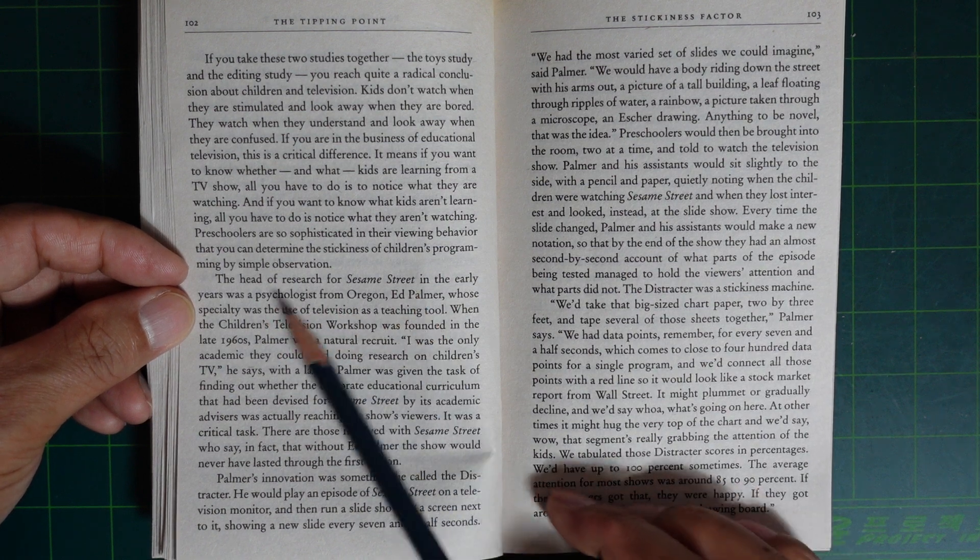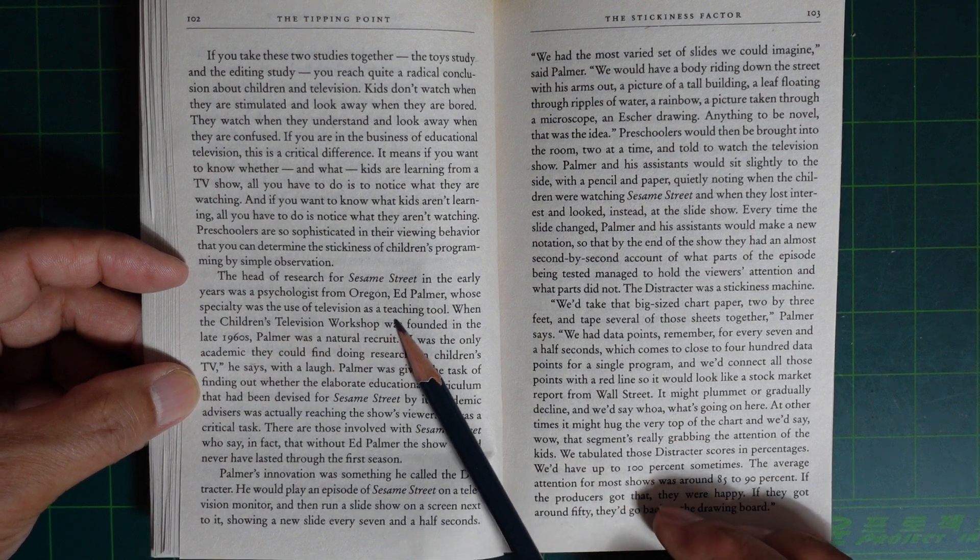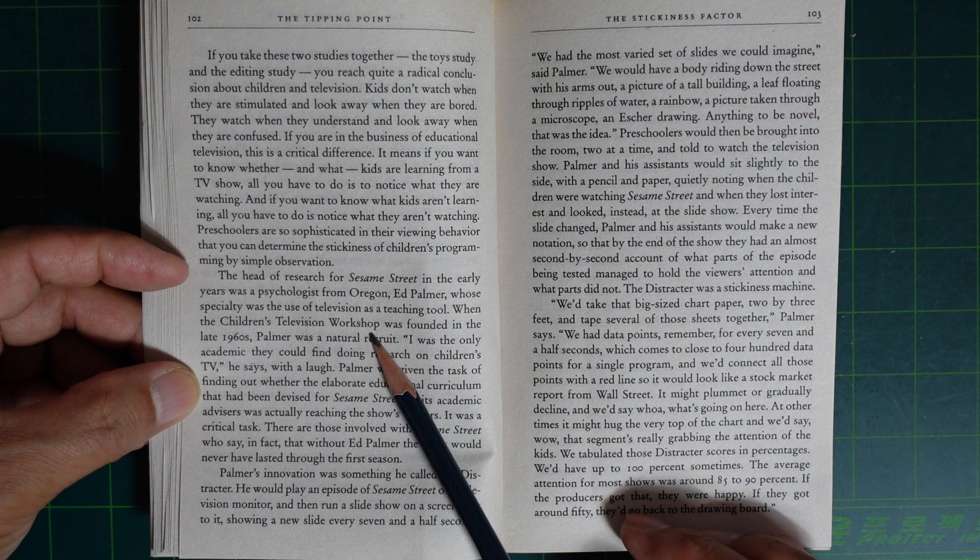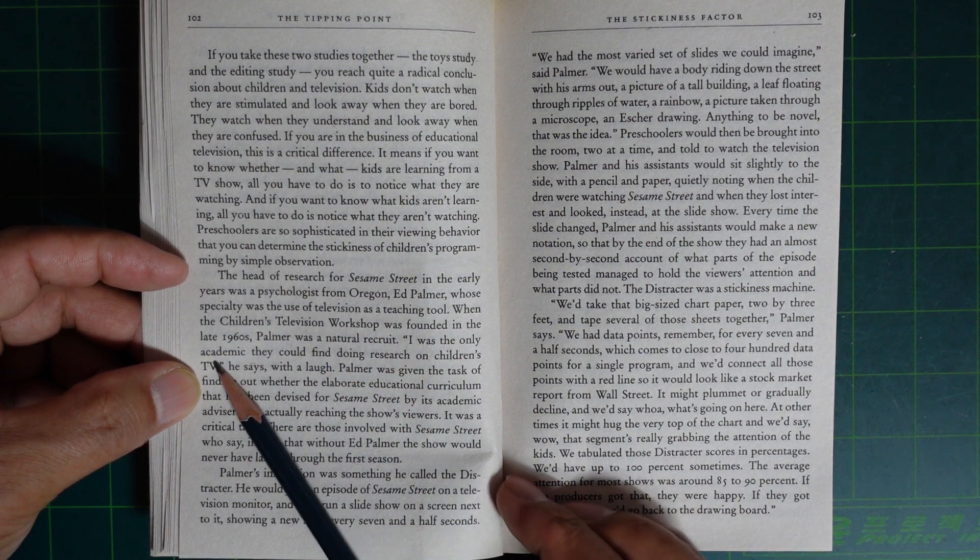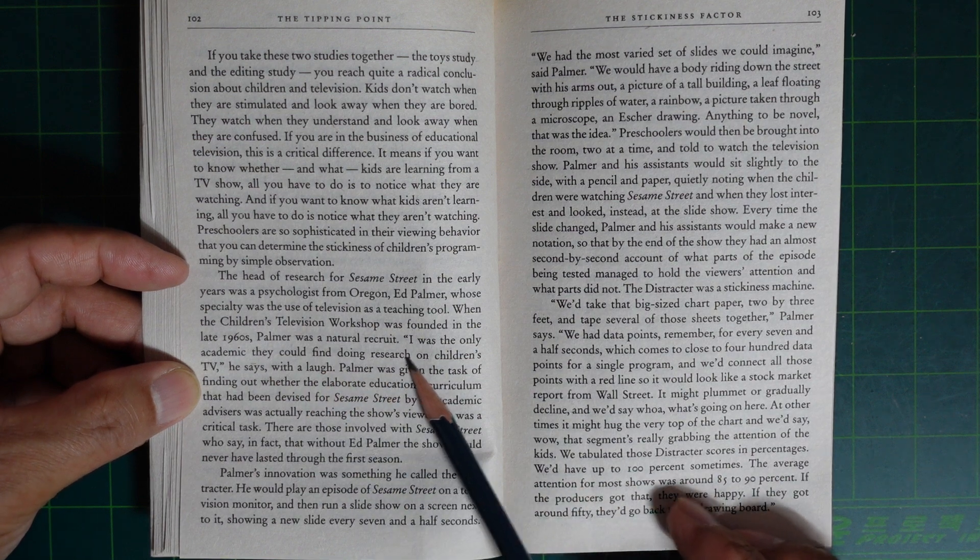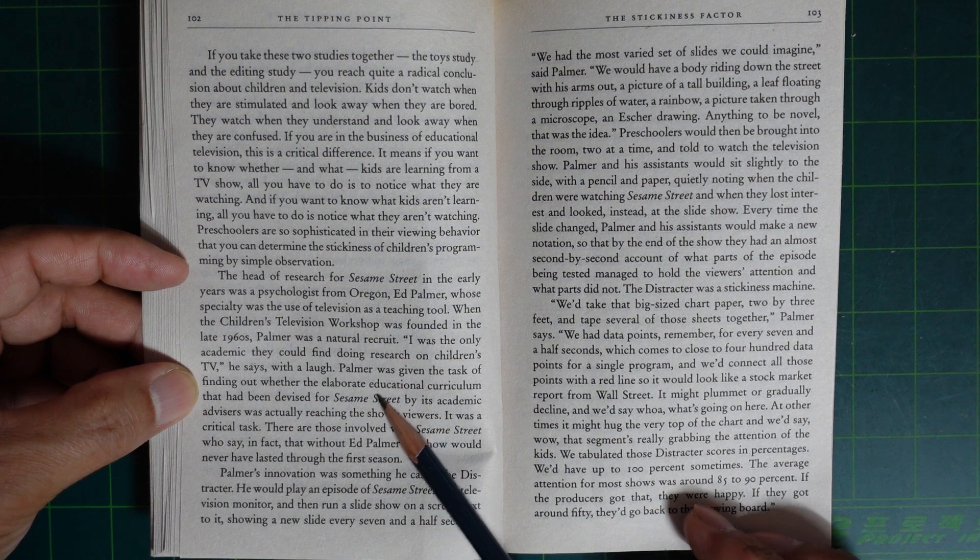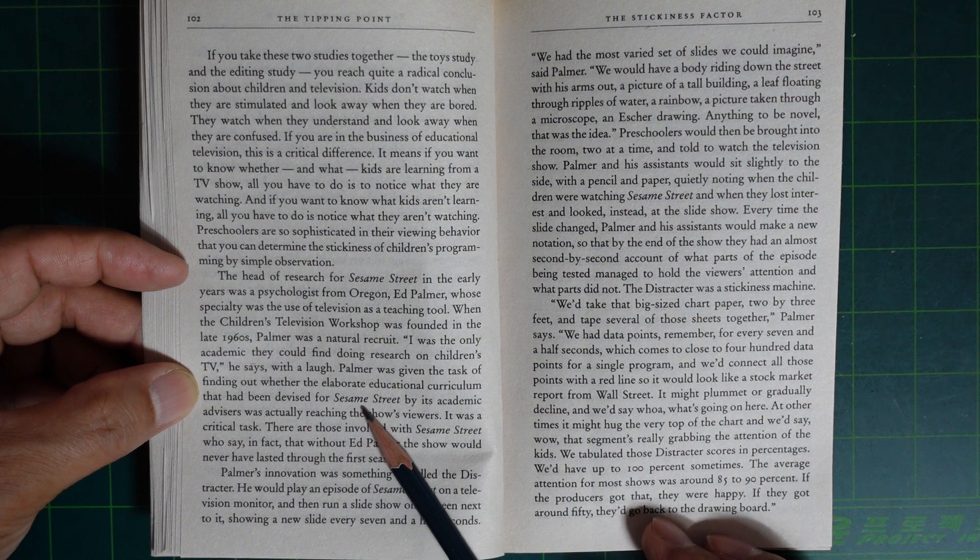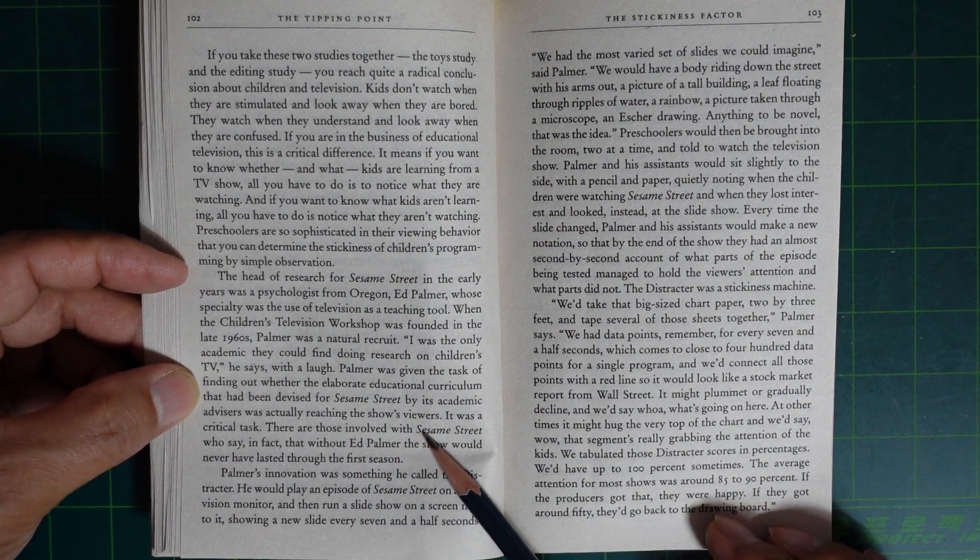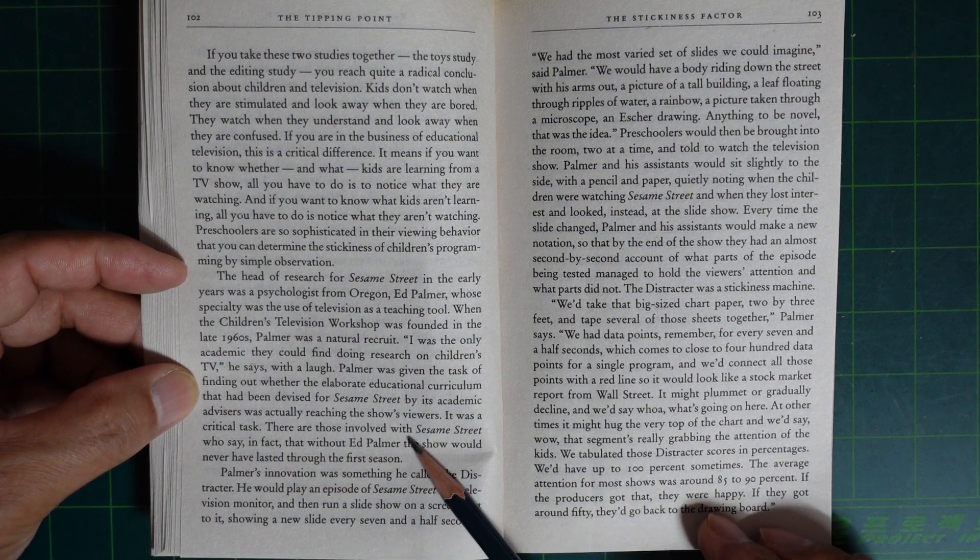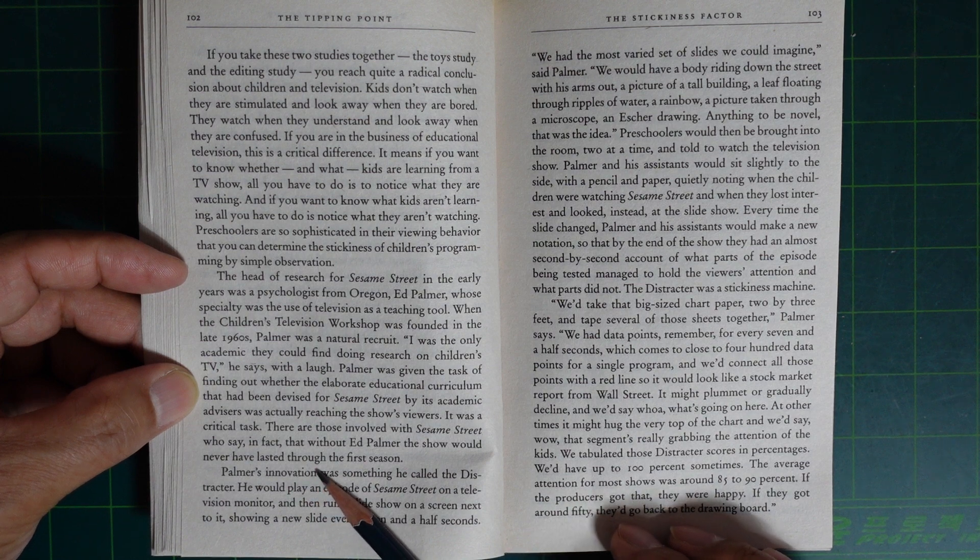Preschoolers are so sophisticated in their viewing behavior that you can determine the stickiness of children's programming by simple observation. The head of research at Sesame Street in the early years was a psychologist from Oregon, Ed Palmer, whose specialty was the use of television as a teaching tool. When the Children's Television Workshop was founded in the late 1960s, Palmer was a natural recruiter. 'I was the only academic they could find doing research on children's TV,' he said. Palmer was given the task of finding out whether the elaborate educational curriculum devised for Sesame Street was actually reaching the show's viewers. It was a critical task. Without Ed Palmer, the show would never have lasted through the first season.